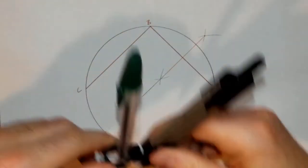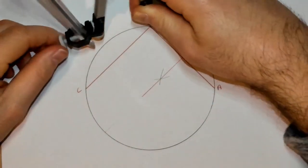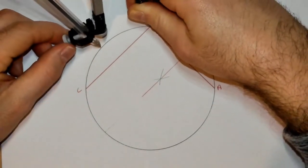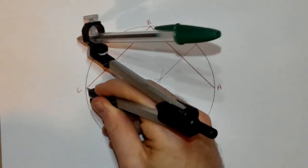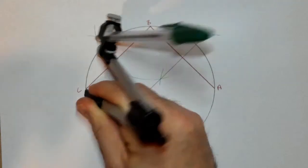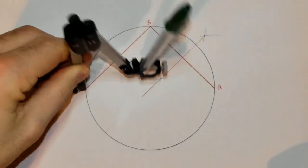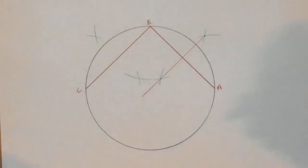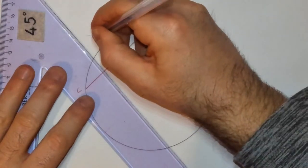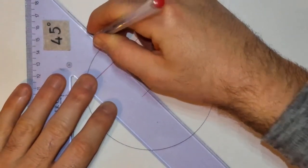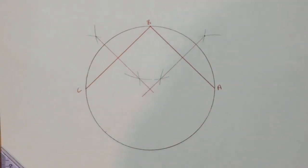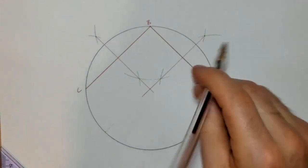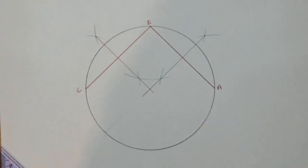I'm going to do the exact same with chord B, C. Pick a distance slightly greater than halfway. Once again, where your bisectors are, connect those. Where the two perpendicular bisectors intersect here,